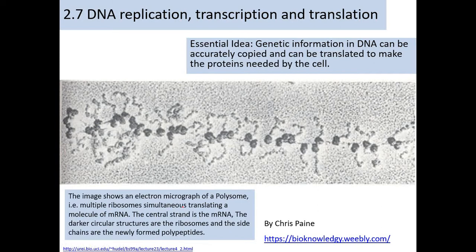As you can see, the image shows an electron micrograph of a polysome — multiple ribosomes simultaneously translating a molecule of mRNA. The central strand is the mRNA, the darker circular structures are the ribosomes, and the side chains are newly formed polypeptides coming out of each ribosome. This is a highly multifunctional translating structure of the cell.